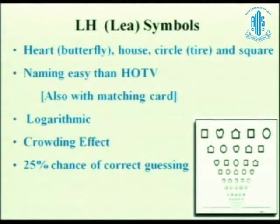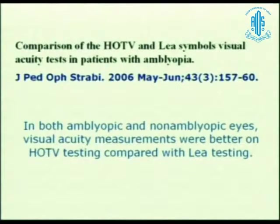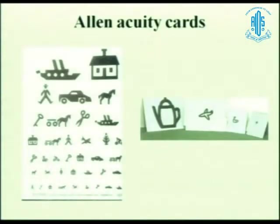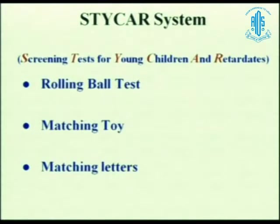There are distance and near charts, and Lea symbols — again only 4 responses, so 25% chance of guessing correctly. The four options are heart, house, circle, and square. Naming is easier for the kid compared to HOTV. Allen preschool charts have interesting pictures — they now have matching cards so the kid can tell whether he sees a car, engine, house, or horse. K picture charts are another way of doing the same thing. The Stycar system is basically a screening test for young children and children with intellectual disabilities. There is also a rolling ball test, matching toy test, and matching letter test.